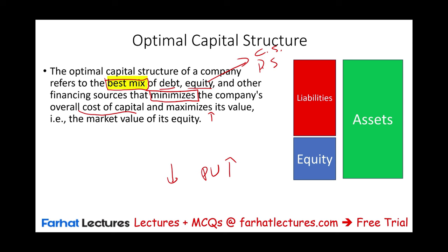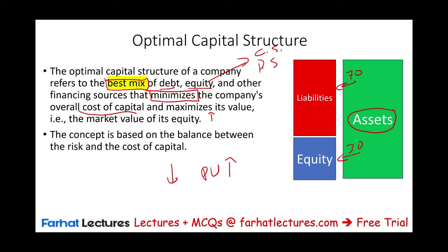From an accounting perspective, all your assets come from debt and equity. If you are financed 70% from debt — which is liabilities — and 30% from equity, your capital structure is 70% debt and 30% equity; they have to add up to 100%. Balancing between risk and the cost of capital is what gives us the optimum capital structure.